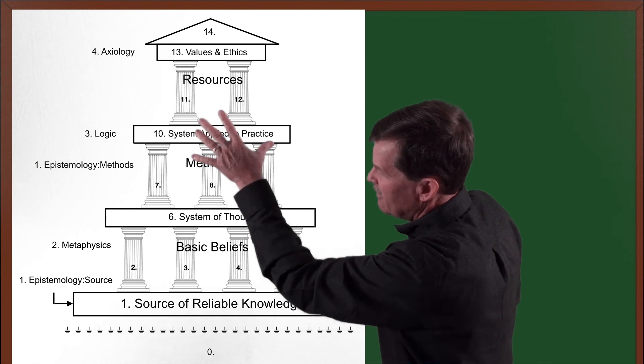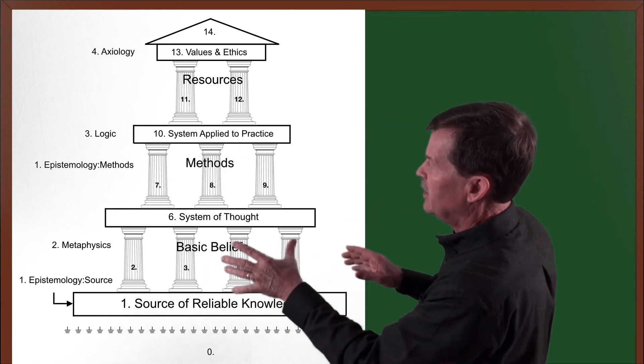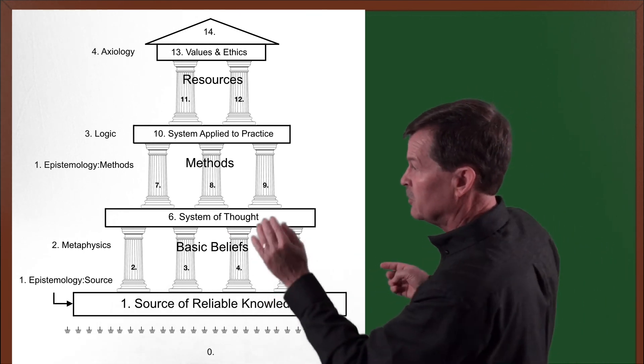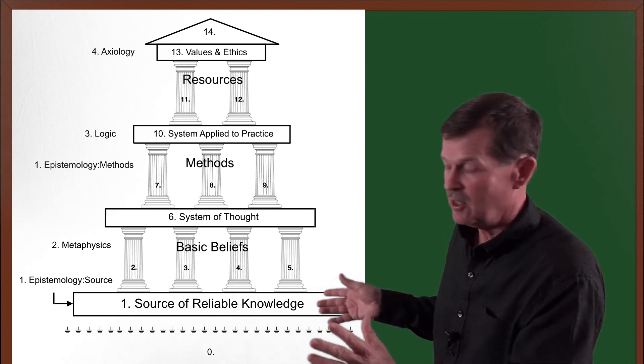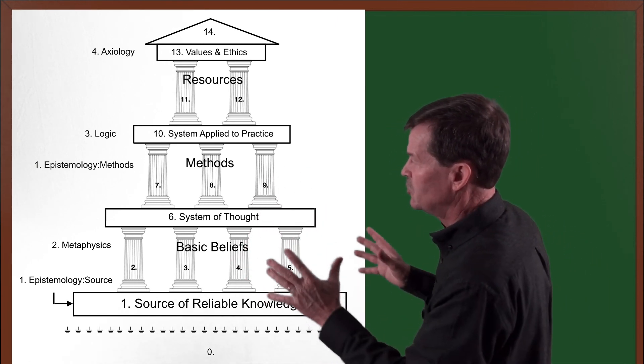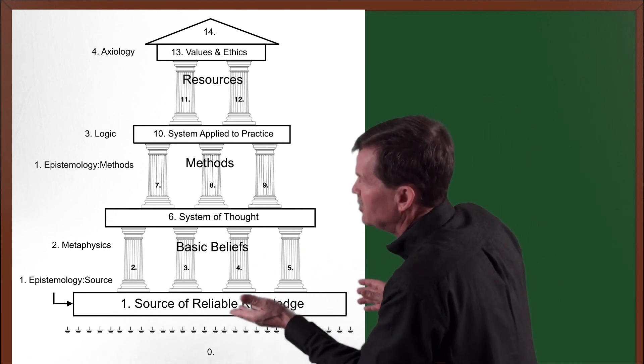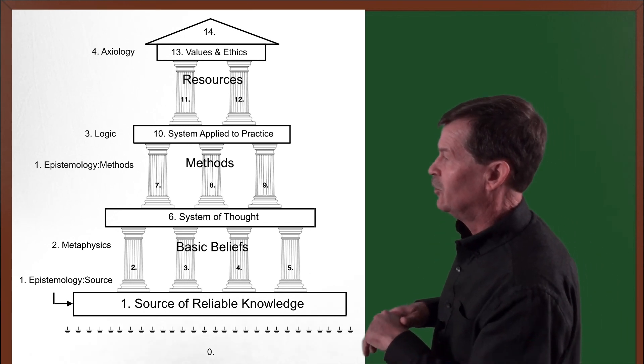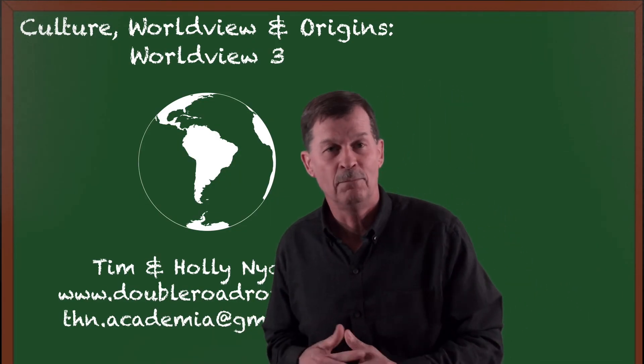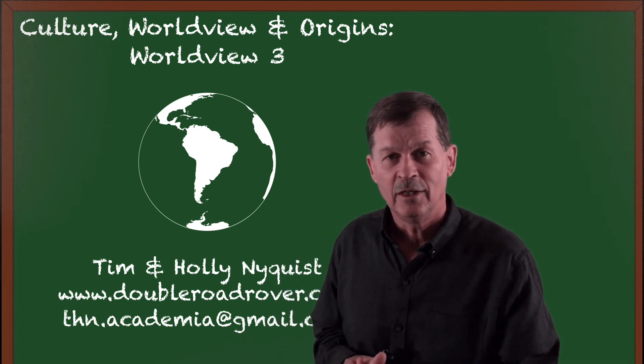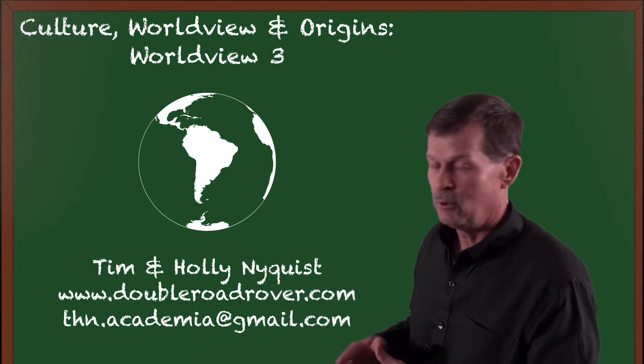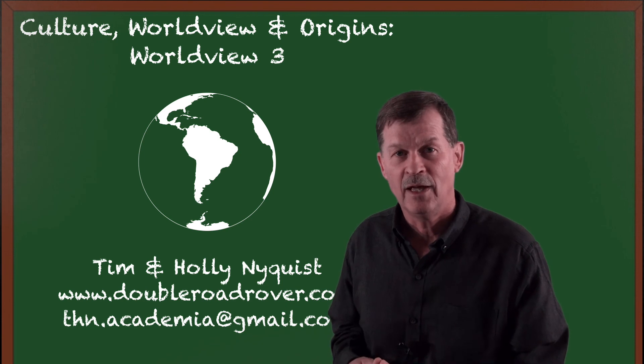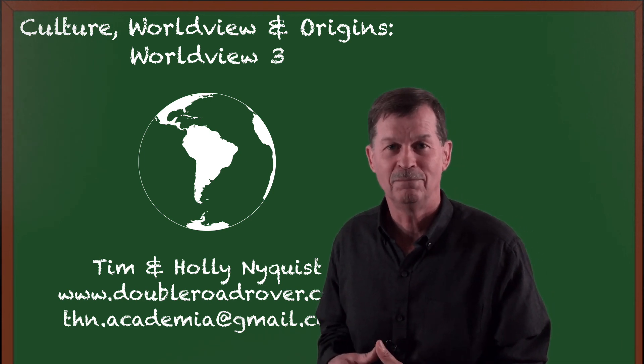And so now you can see how philosophy corresponds to the house that we had seen earlier of worldview. So this house we're going to be using through the rest of the series, but it's just a house to visually represent the sequence of philosophy and the different branches of it and how they go together. Thank you again for accompanying me, and we're Tim and Holly. If you'd like to correspond with us, we're at doubleroadrover.com or at thn.academia at gmail.com. Thanks for accompanying me. See you next time.